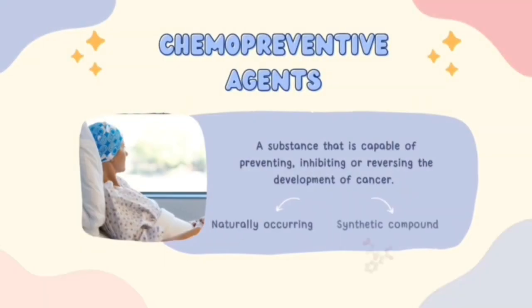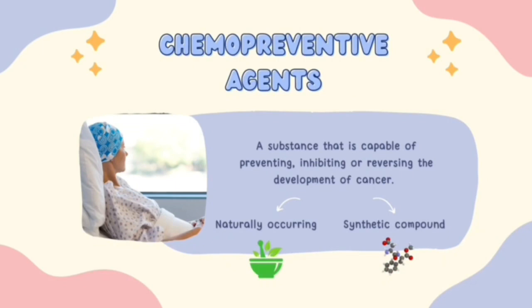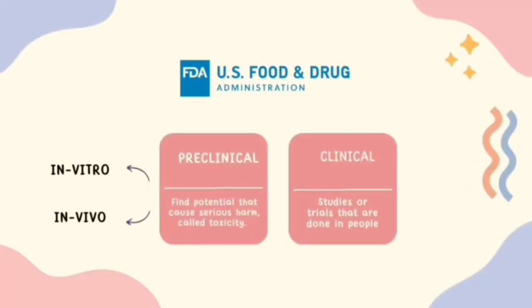So what is a chemopreventive agent? A chemopreventive agent is a substance that is capable of preventing, inhibiting, or reversing the development of cancer. Chemopreventive agents have been developed based on preclinical and clinical data showing that specific compounds modulate key molecular and cellular mechanisms that promote tumorigenesis.